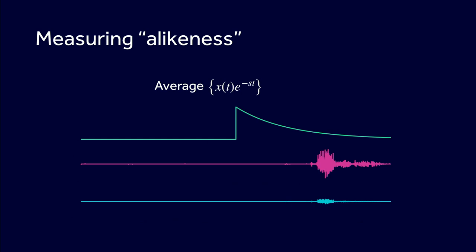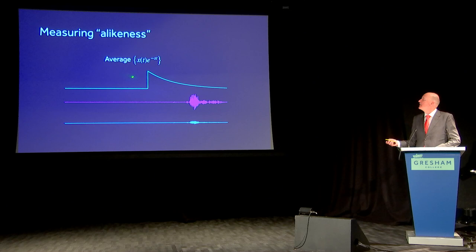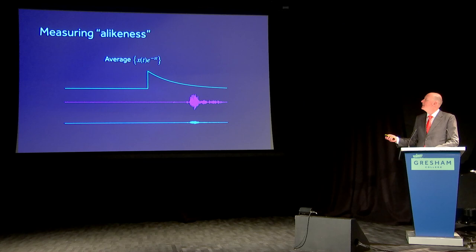So if I could express a waveform as some sum of e^(st) terms, I've already solved for those a few slides back — all I need to do is add up the outputs. How could I convert a waveform into a sum of e^(st) or e^(-st) terms? One way is to measure how alike my waveform is to that particular exponential waveform — and I can do that by multiplying the waveform by the thing I'm measuring against and then averaging it.